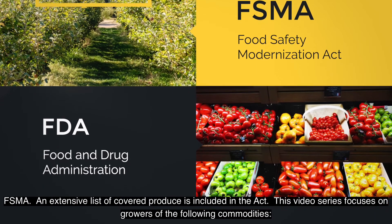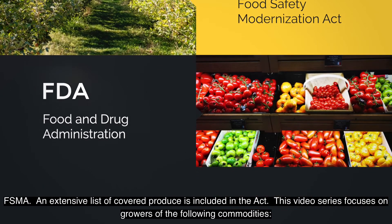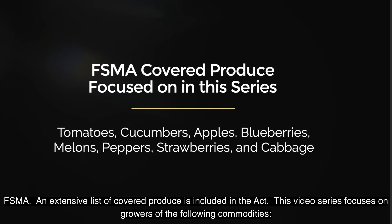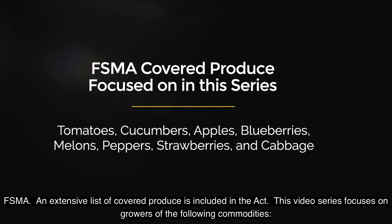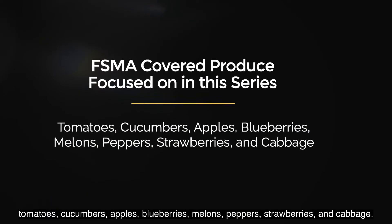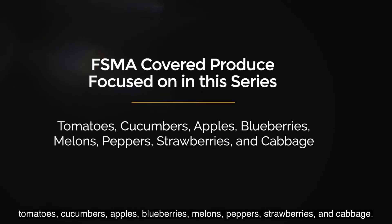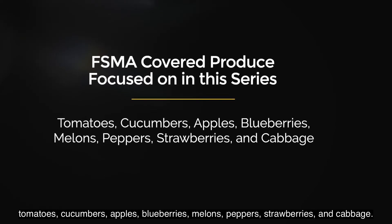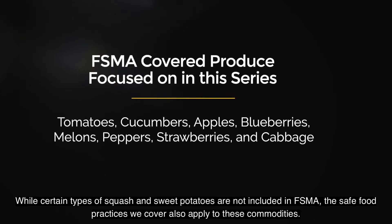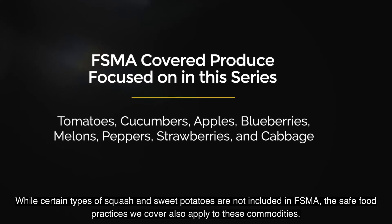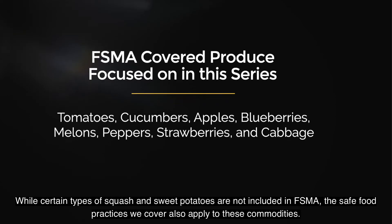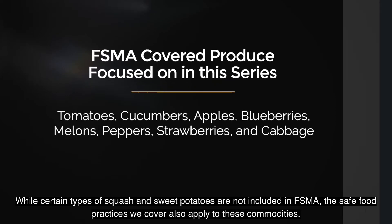An extensive list of covered produce is included in the Act. This video series focuses on growers of the following commodities: tomatoes, cucumbers, apples, blueberries, melons, peppers, strawberries, and cabbage. While certain types of squash and sweet potatoes are not included in FSMA, the safe food practices we cover also apply to these commodities.